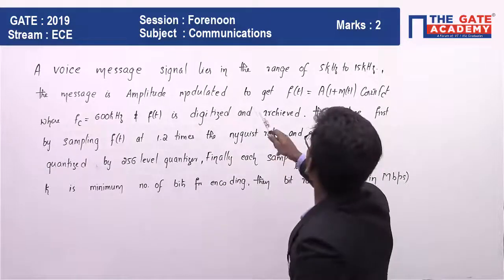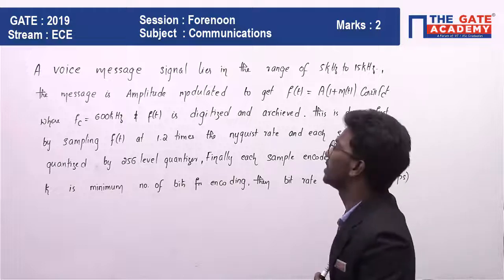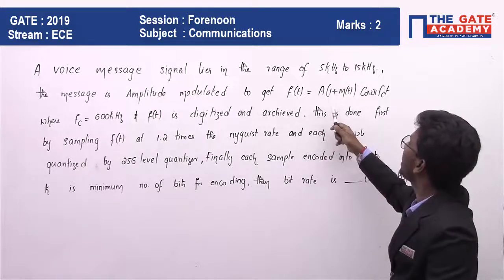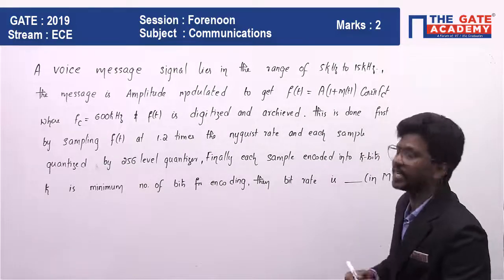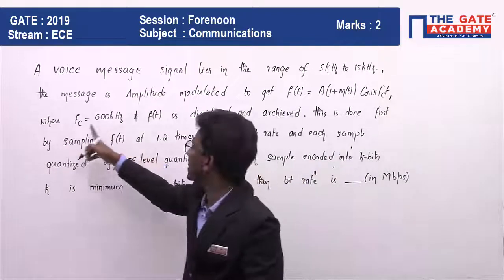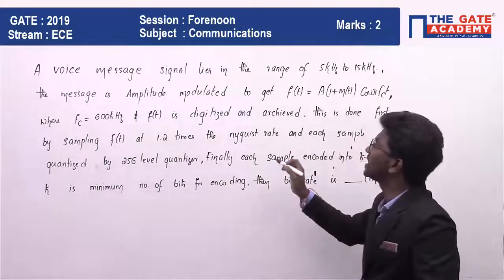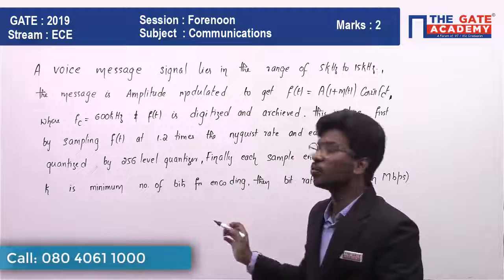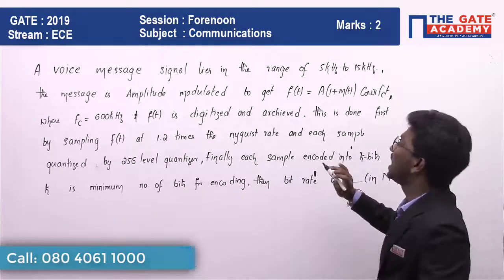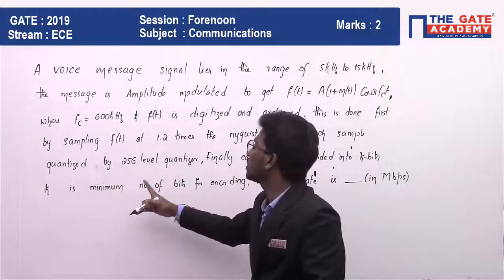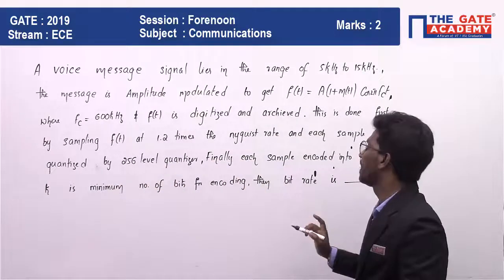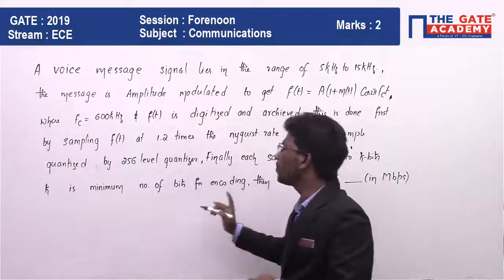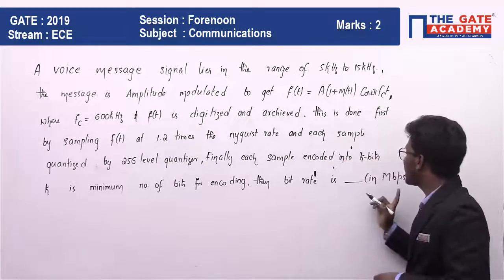A voice message signal lies in the range of 5 kHz to 15 kHz. The message is amplitude modulated to get f(t) = A × (1 + m(t)) × cos(2π·fc·t), where fc = 600 kHz. f(t) is digitized and archived by first sampling f(t) at 1.2 times the Nyquist rate, and each sample is quantized by a 256-level quantizer. Finally, each sample is encoded into k bits, where k is the minimum number of bits for encoding. The bit rate is __ Mbps.